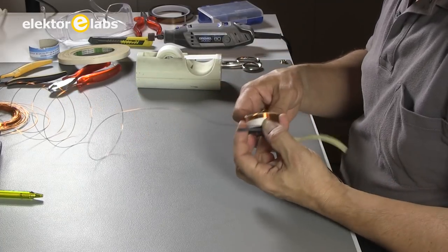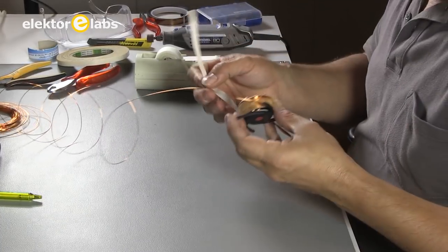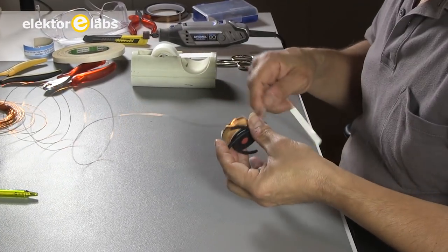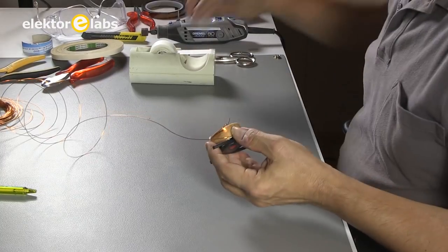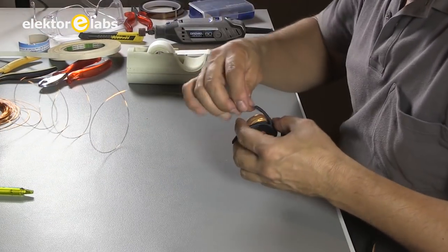Next, apply a strip of double-sided tape over this first layer, then continue winding in the same direction, but this time from bottom to top to form the second layer of 25 turns.